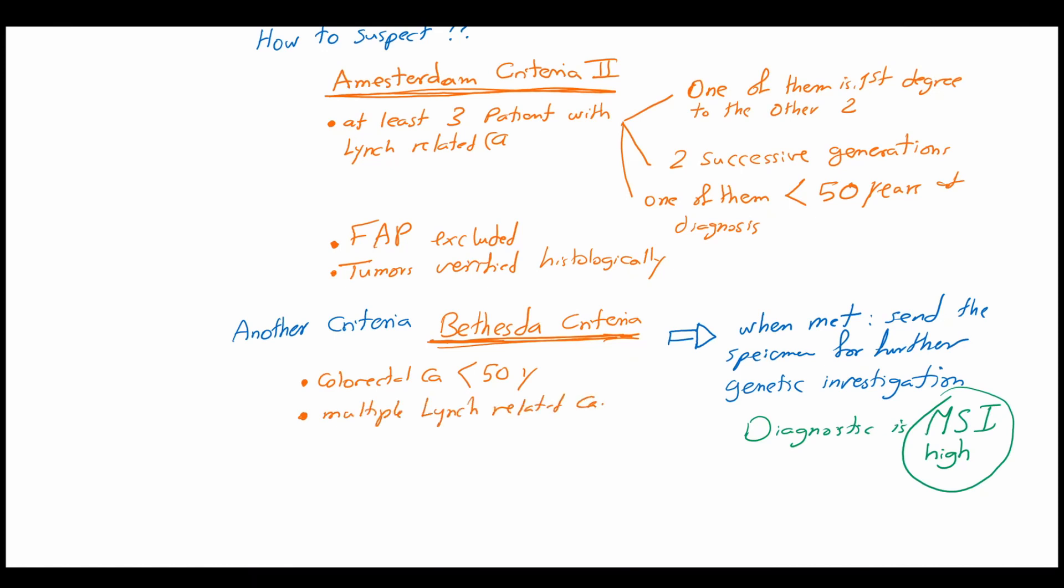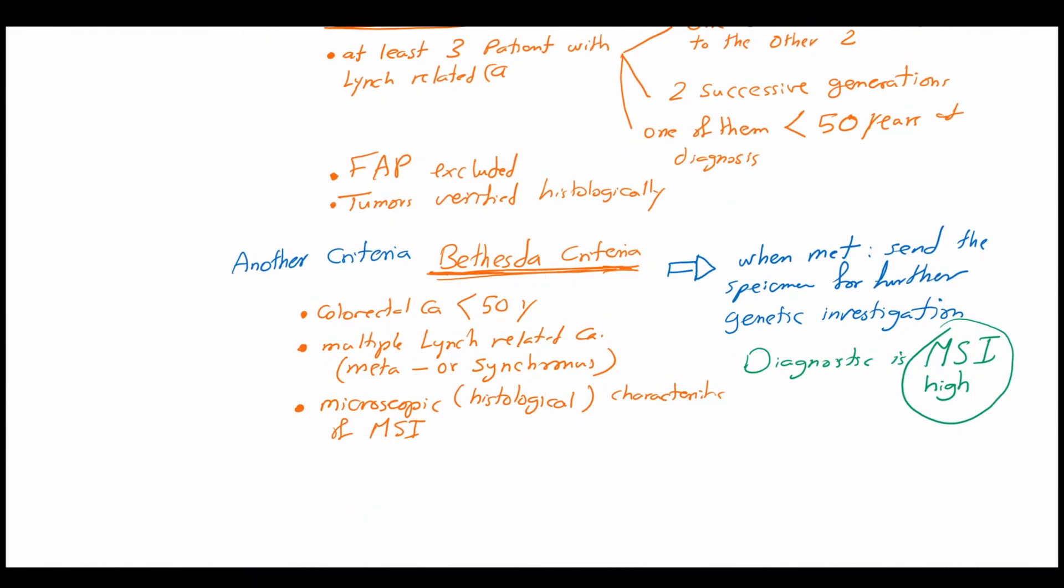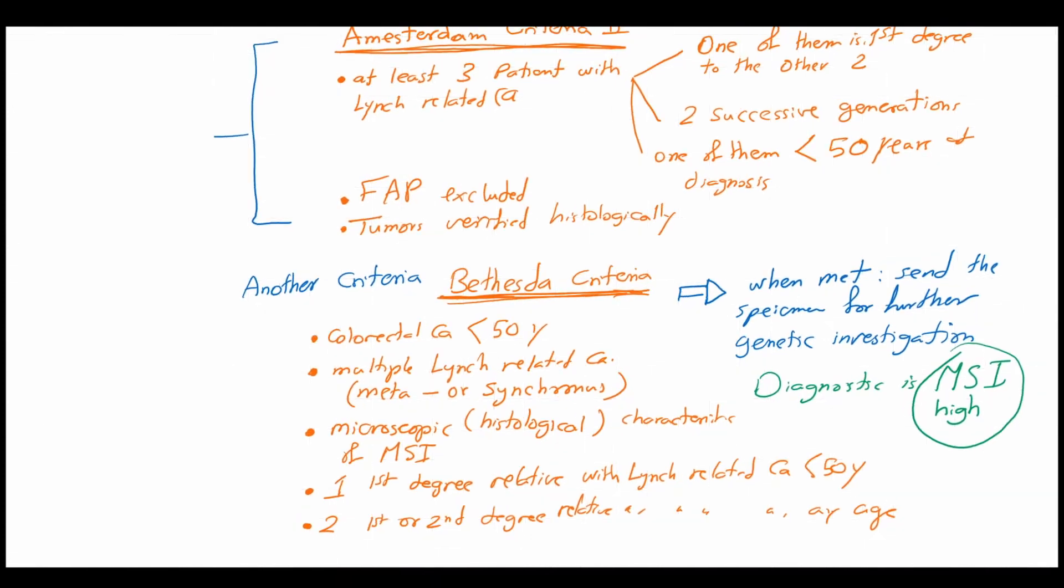The Bethesda criteria includes a colorectal carcinoma at age younger than 50 years old, multiple Lynch syndrome related carcinoma, metachronous or synchronous, microscopic or the histological characteristic of the microsatellite instability, one first degree relative with Lynch syndrome related carcinoma younger than 50 years old, two first or second degree relatives with Lynch related carcinoma at any age. Here we can notice that this criteria is more postoperative criteria in contrary to the Amsterdam criteria which is history-based.